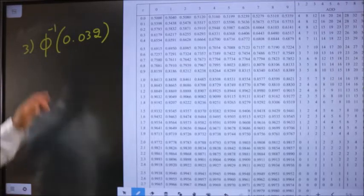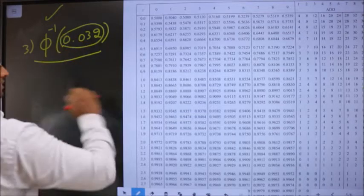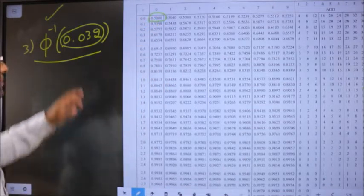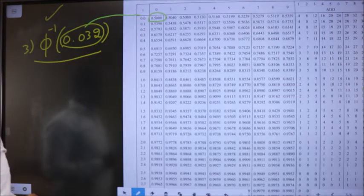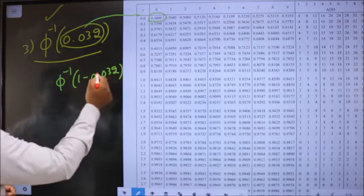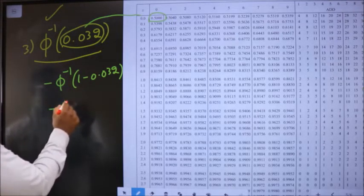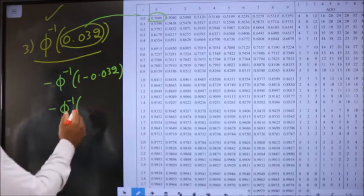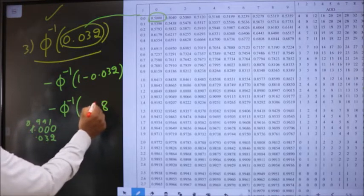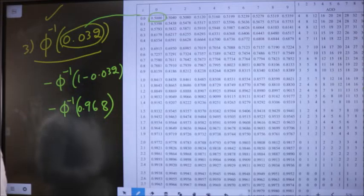Now I want to find Φ⁻¹(0.032). Since it's inverse, this value should be searched in the table. The problem is the values begin with 0.5, so 0.032 must be made greater than 0.5 by subtracting from 1. Whenever inside we subtract the value from 1, outside you put the negative sign. So this becomes minus Φ⁻¹ of 1 minus 0.032, which equals 0.968.